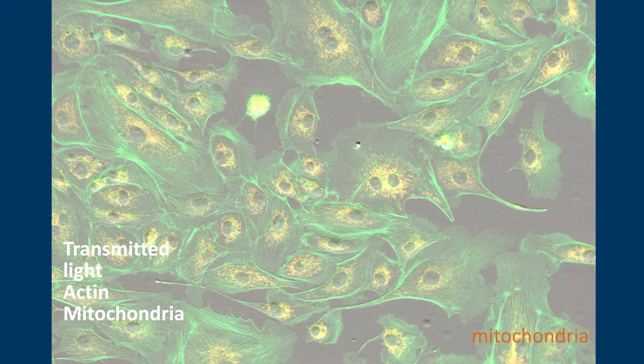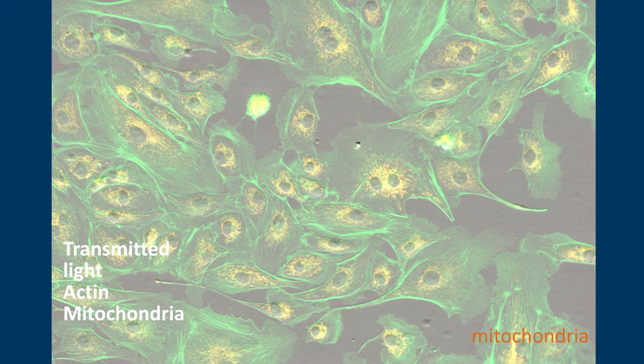So let's put it all together. We'll take a look at our transmitted light image and we'll overlay our actin in green, our mitochondria in orange, and our nucleus in blue.